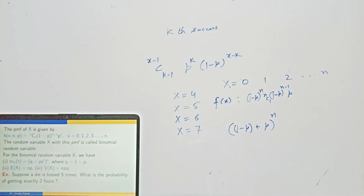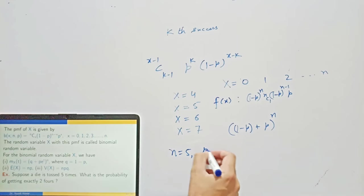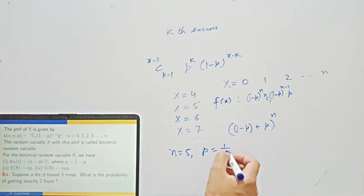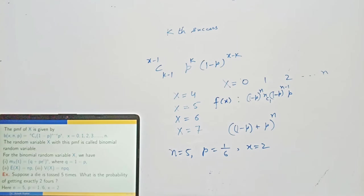Example on binomial distribution: Suppose a die is tossed five times. What is the probability of getting exactly two fours? Here n = 5, the probability of success (getting a four) is P = 1/6, and we need x = 2 successes. Using the binomial distribution formula with these values, the answer is 0.161.